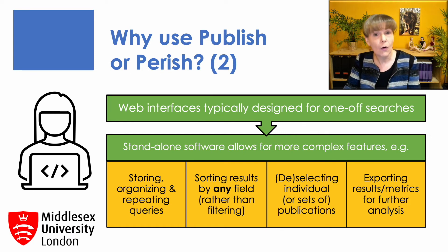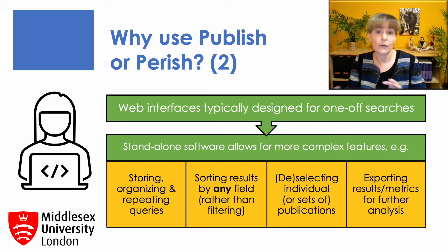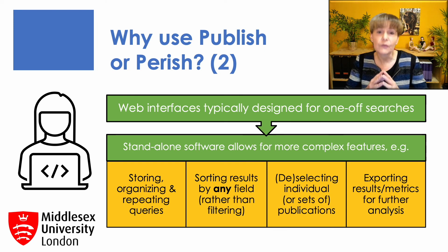Here are some of the things you can do in Publish or Perish that are not possible or far more difficult to do in most of the web interfaces. First, storing, organizing and repeating queries again and again. Second, sorting the results by any field, rather than filtering them. Third, selecting or deselecting individual or sets of publications. And finally, flexibly exporting the results and metrics for further analysis in, for instance, Excel or statistical programs. All this makes Publish or Perish far more suitable for those wanting to do serious and repeated analysis in academia.